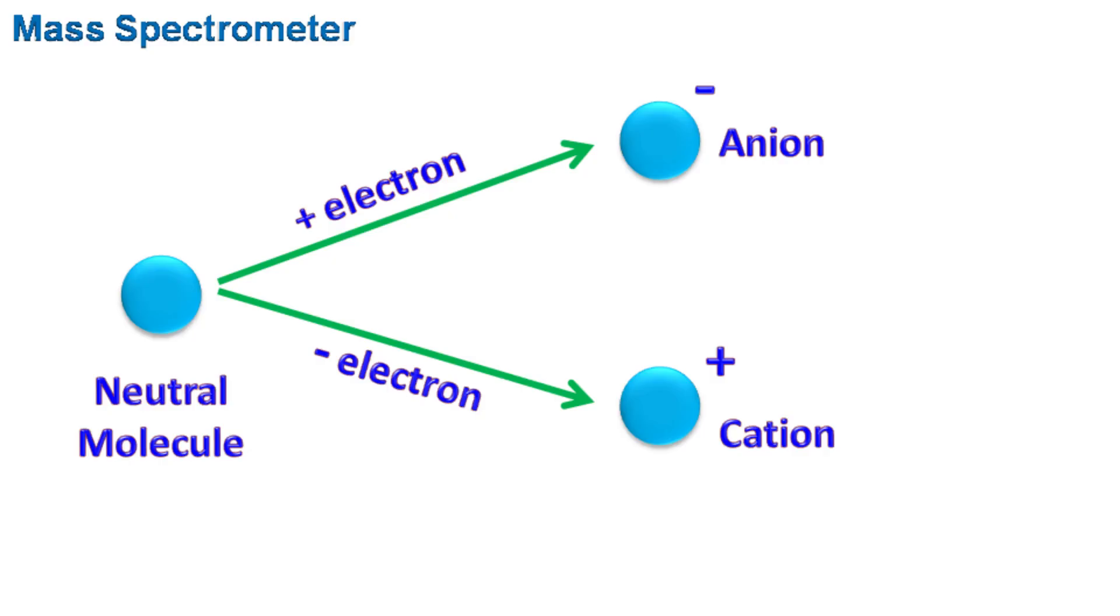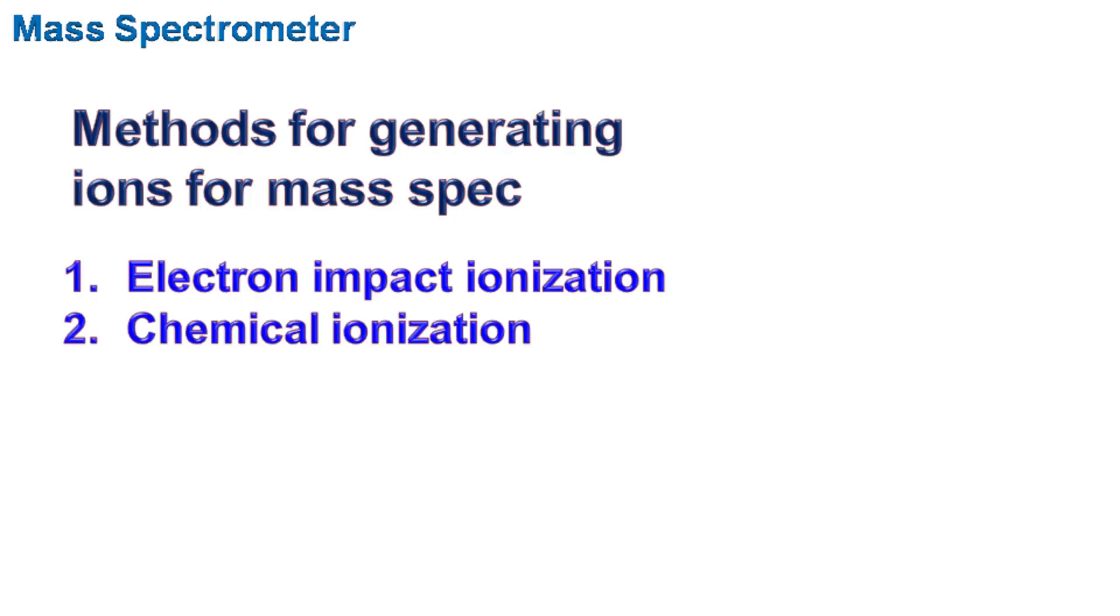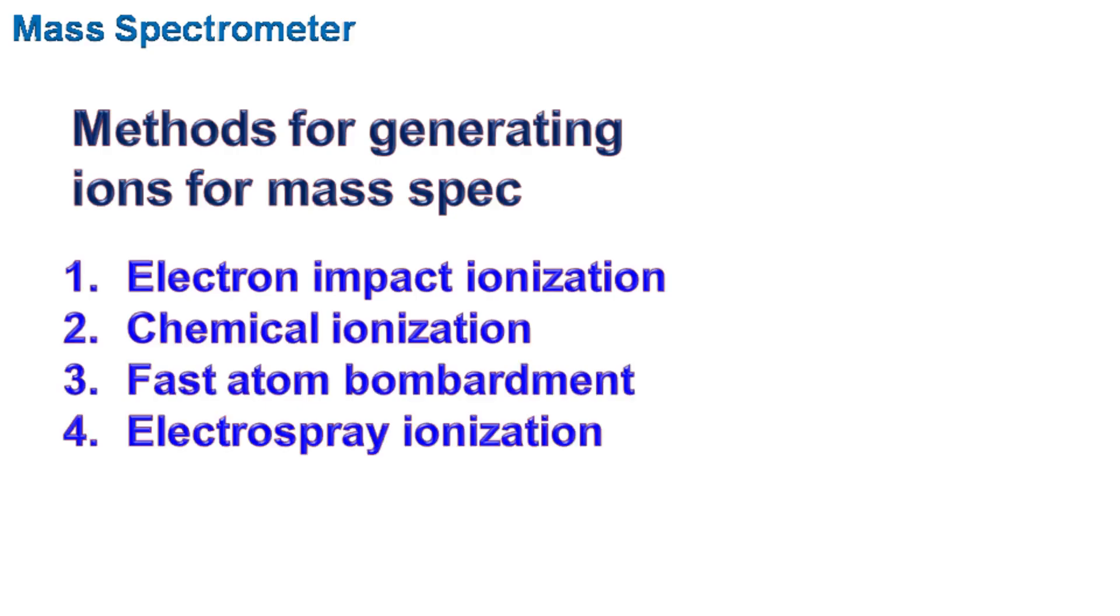There are several ways to generate ions for mass spectrometry. Let's talk about them: number one, electron impact ionization; number two, chemical ionization; number three, fast atom bombardment; and number four, electrospray ionization.